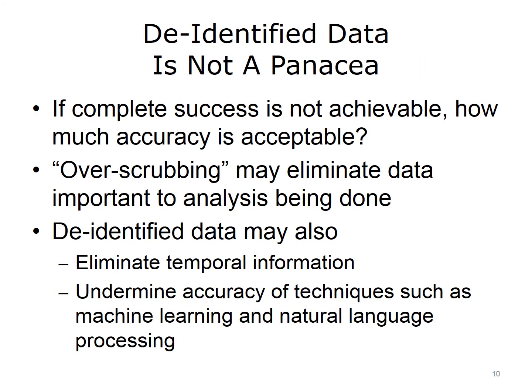It's also important to remember that when we de-identify data, there are a number of issues — it's not necessarily a panacea. First of all, we know that complete 100% de-identification is difficult, if not impossible, to achieve. So if we can't achieve complete success at de-identifying data, how much accuracy is acceptable? We also know that some personal health information elements may be more acceptable to not having — for example, parts of street addresses, which sometimes fall through de-identification programs, versus names, which we probably want to be absolutely sure never pass through.